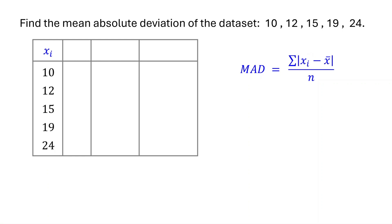In the second column, find the mean and write it down. In the third column, calculate the difference between each data point and the mean. In the last column, take the absolute value of each difference.